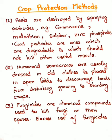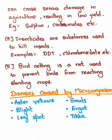Next is Fungicides. Fungicides are chemical compounds used to kill fungi and their spores. However, excess use of fungicides can cause serious damage in agriculture, resulting in low yield and reduced production. Some examples of fungicides are Sulfur, Carbamates, etc.